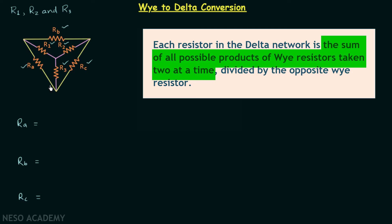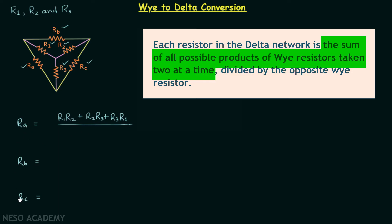So let's take r1 and r2 — this gives us r1 multiplied by r2. The next possibility is r2 multiplied with r3, and the last possibility is r3 multiplied with r1. So these are the three possible product terms in which we have taken two Y resistors at a time. Then we want the sum of these product terms, so we add them. This sum will be in the numerator of all ra, rb, and rc.